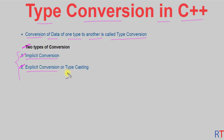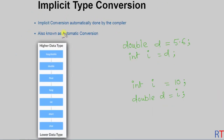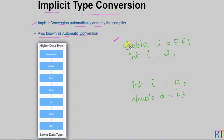Explicit conversion is also called type casting. First we're going to talk about implicit type conversion. Implicit conversion is automatically done by the compiler, and it is also known as automatic conversion. For example, here we have one double variable 'd'.